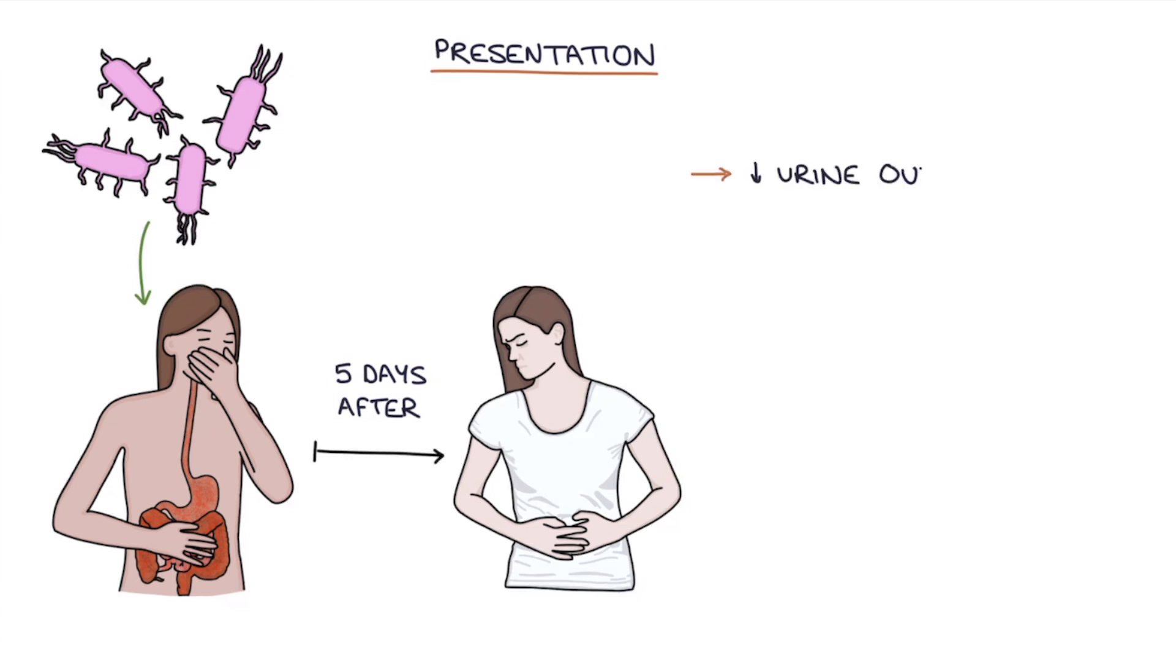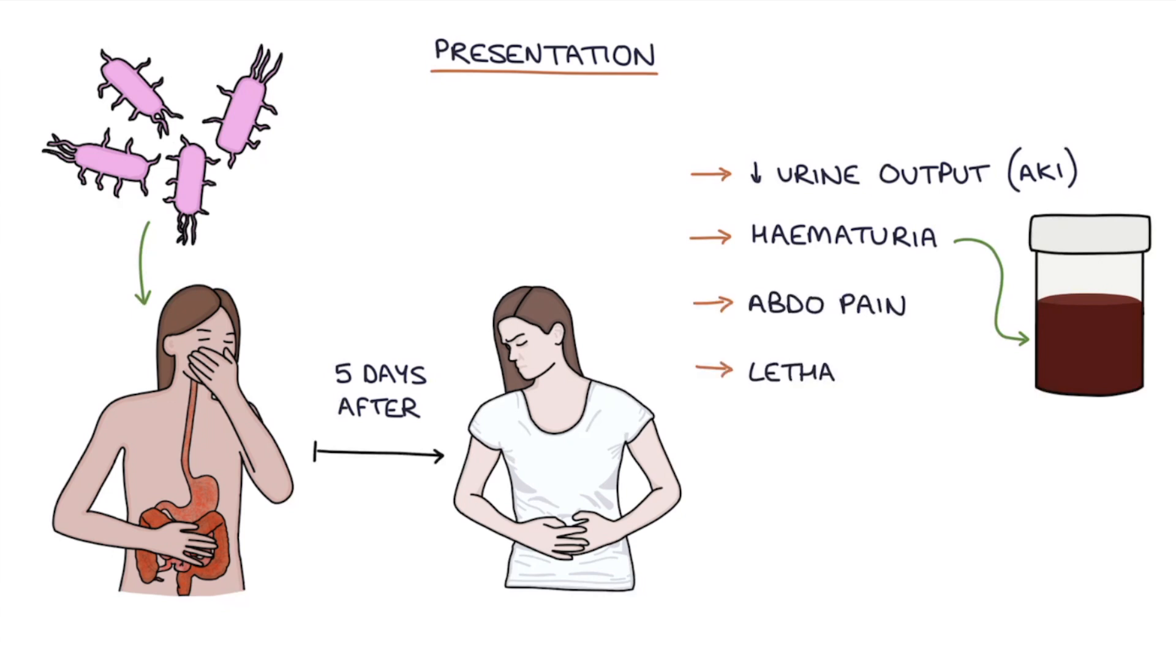And these are things like reduced urine output because of the acute kidney injury, hematuria or dark brown urine, abdominal pain, lethargy and irritability, confusion, hypertension or high blood pressure, and also bruising.